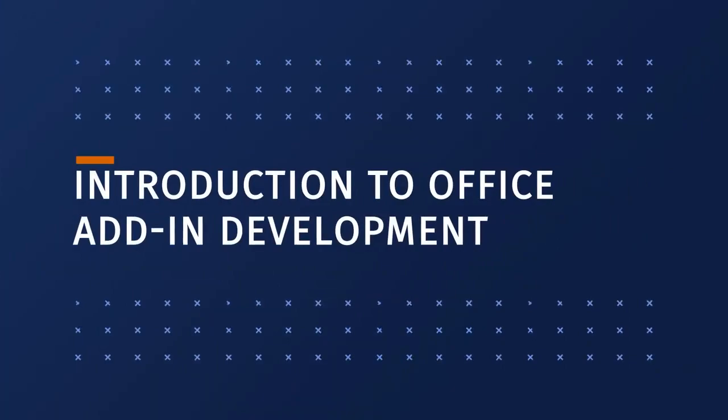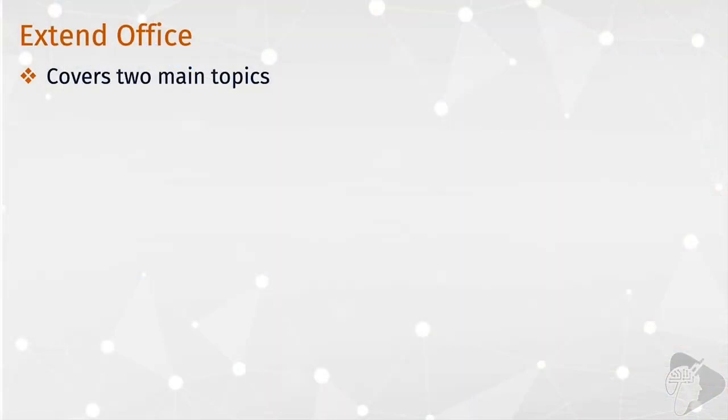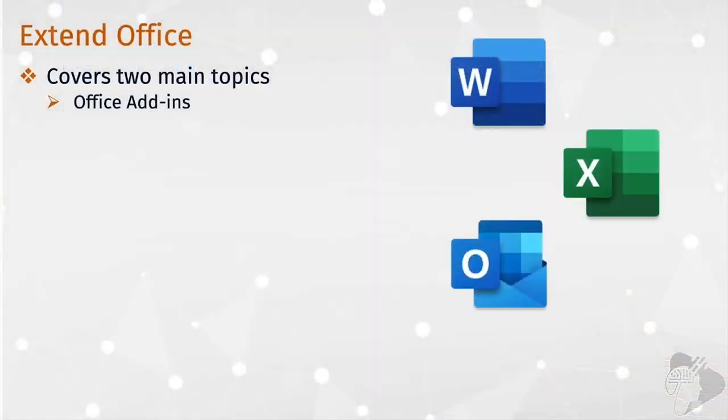The MS600 exam calls this workload 'extending office,' and it really encompasses just two different topics. The first topic is Office add-ins. While you can build multiple types of add-ins for various Office apps, the exam focuses on three: Word, Excel, and Outlook. There's an honorable mention of PowerPoint, but you really just need to know what's possible — there won't be many questions about it. The exam focuses primarily on Word, Excel, and Outlook.